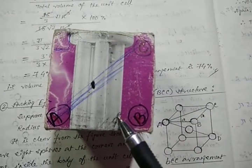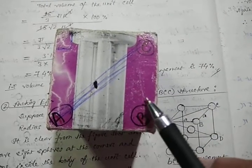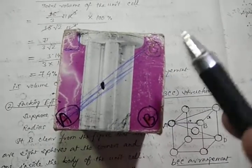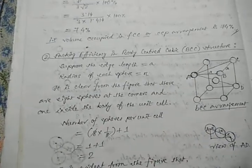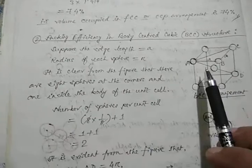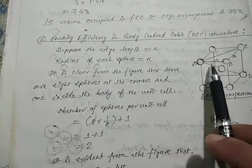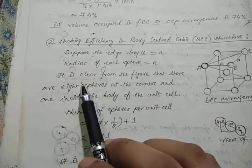In this case, a equals b equals c. According to Pythagoras theorem, we can apply this concept. Suppose the edge length is equal to small a. The radius of the particle is small r.